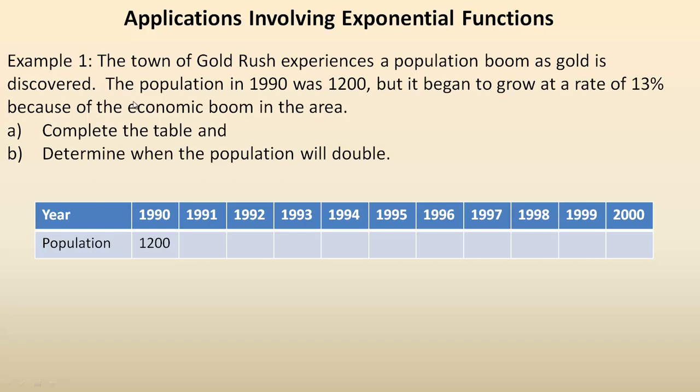In the first one we've got this fictional town of Gold Rush and they experience a population boom since gold is discovered. The population starting in 1990 was 1200 people but because of the discovery of the gold it's growing at a rate of 13%. So it says complete the table and determine when the population will double.